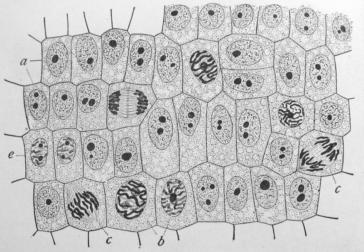The cytoskeleton acts to organize and maintain the cell's shape, anchors organelles in place, helps during endocytosis (the uptake of external materials by a cell), and cytokinesis (the separation of daughter cells after cell division), and moves parts of the cell in processes of growth and mobility. The eukaryotic cytoskeleton is composed of microfilaments, intermediate filaments, and microtubules. There are a great number of proteins associated with them, each controlling a cell structure by directing, bundling, and aligning filaments. The prokaryotic cytoskeleton is less well studied but is involved in the maintenance of cell shape, polarity, and cytokinesis.